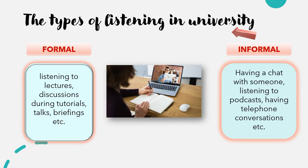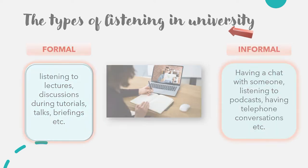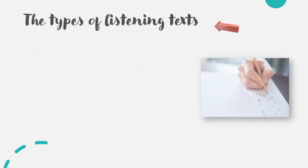In an informal context, you will do some listening when having a chat with someone, listening to a podcast, having a telephone conversation with a friend, and so on. So now let's find out what are the types of listening texts that you will get in the MUED listening paper.